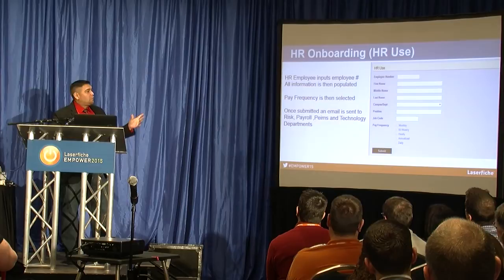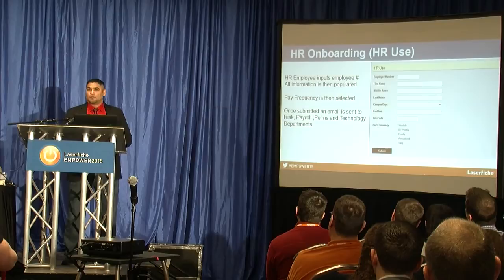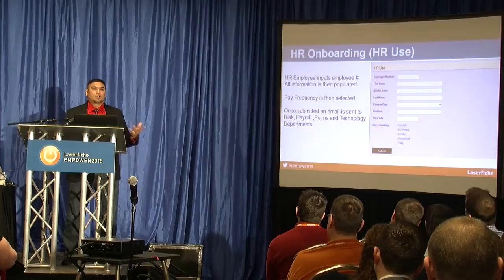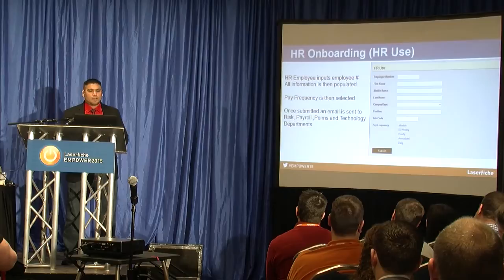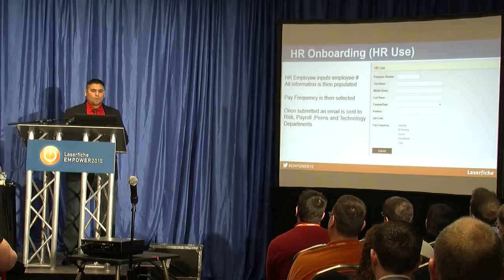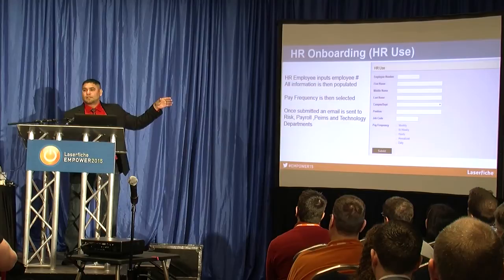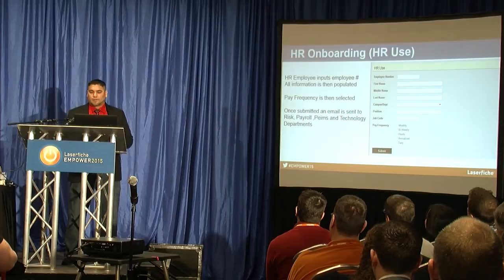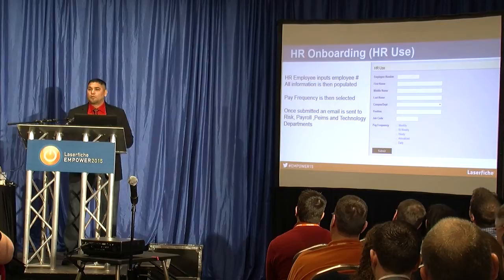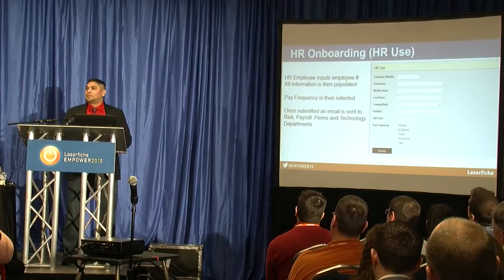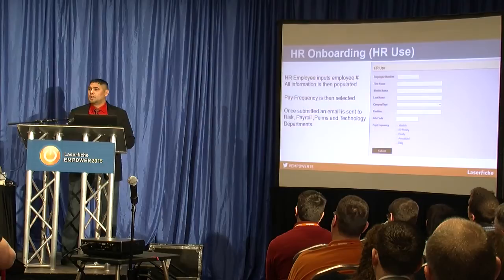After the employee fills out their section, HR receives the back-end form. The person in charge of compensation types in the employee ID number; a lookup goes to our database and populates everything in the system. They then enter pay frequency — monthly, biweekly, or hourly. Once done, an email is sent to RISC, payroll, teams, and technology to notify them of the new employee. The system does that automatically, so other departments don't have to wait or send extra emails.